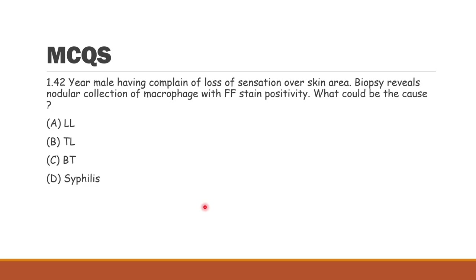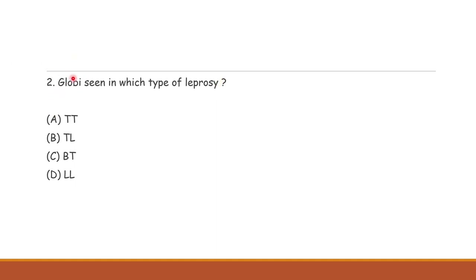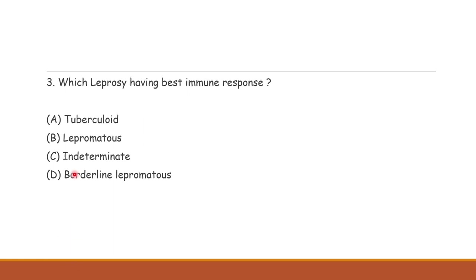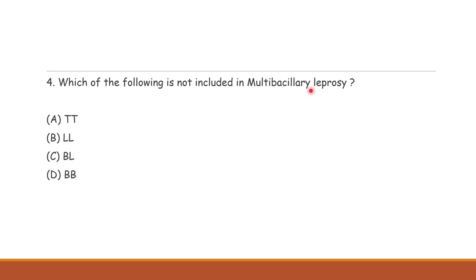MCQ 1: A patient with loss of sensation over a skin area, biopsy showing nodular collection of macrophages, and positive FF stain — the clue of nodular macrophage collection indicates lepromatous leprosy. MCQ 2: Globi are seen where bacterial load is high — they form cigarette-packet-like structures — so globi are seen in lepromatous leprosy. MCQ 3: Which leprosy has the best immune response? Answer: tuberculoid leprosy. MCQ 4: Which is not included in multibacillary leprosy? Tuberculoid leprosy is not included in multibacillary — it comes under paucibacillary leprosy.